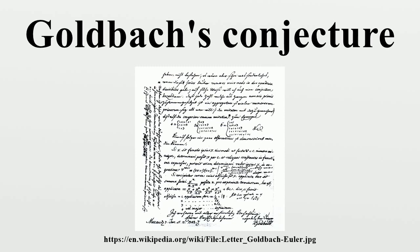The two conjectures are now known to be equivalent. A modern version of Goldbach's marginal conjecture is: every integer greater than five can be written as the sum of three primes. Euler replied in a letter dated 30 June 1742, and reminded Goldbach of an earlier conversation they had, in which Goldbach remarked his original conjecture followed from the statement: every even integer greater than two can be written as the sum of two primes, which is thus also a conjecture of Goldbach.